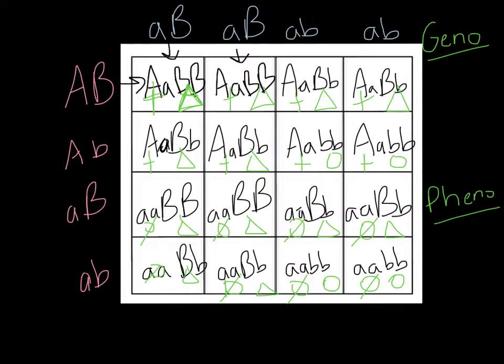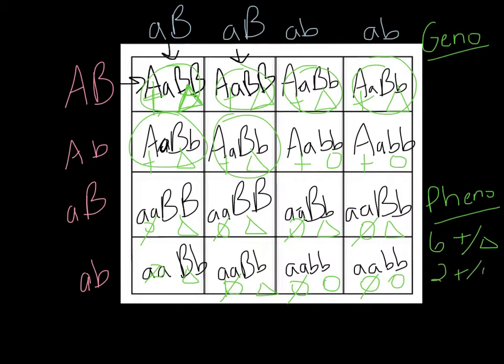So how many have teeth and triangle eyes? We've got one, two, three, four, five, six. And you should do that for all of them. So you've got two with teeth and circle eyes, six with no teeth and triangle eyes, and two with no teeth and circle eyes.